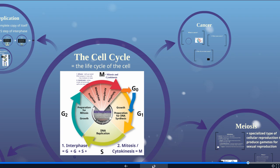The last topic related to the cell cycle is cancer. Cancer is really when something goes wrong in the cell cycle, and a cell skips quickly through interphase when it should be doing its job, and just quickly replicates its DNA and goes straight to mitosis.